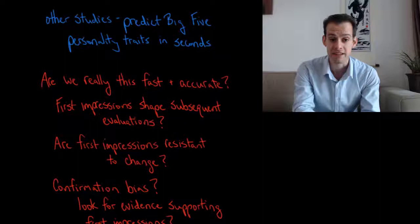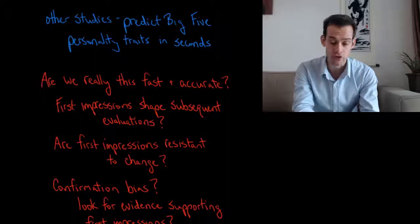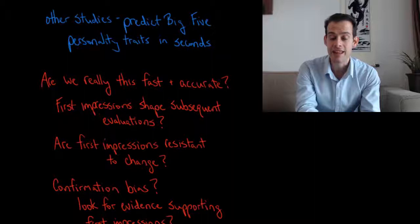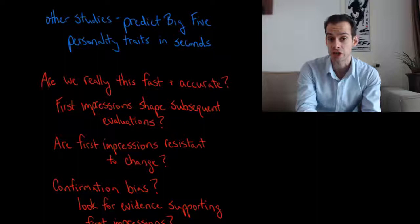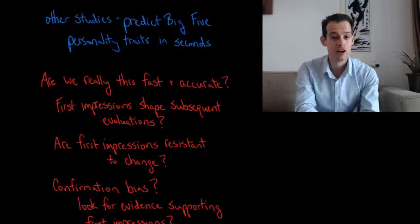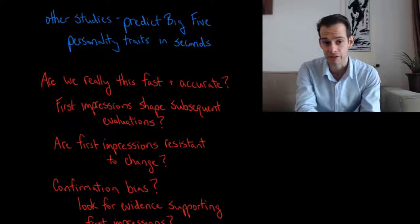Perhaps it's the case that our first impressions are shaping our subsequent evaluations. So maybe for the students who are in a class, they form an impression of the professor within the first few seconds. And then that first impression influences how they perceive the professor throughout the rest of the class and therefore it influences their evaluations at the end of the semester. And that's why they're similar to the students who just saw the 10 second clip. Or it could be the case that our first impressions are resistant to change.